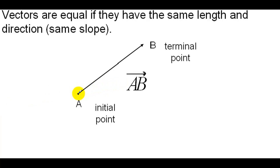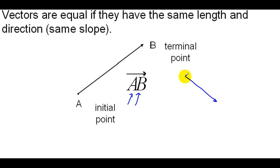We have a vector AB here, with the initial point A and the terminal point B. We denote a vector with a little vector sign and write the initial point first and then the terminal point. So if we have point C and point D, this would be vector CD — it would not be vector DC.